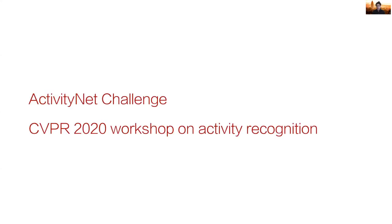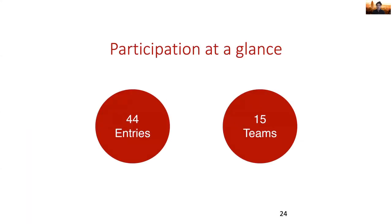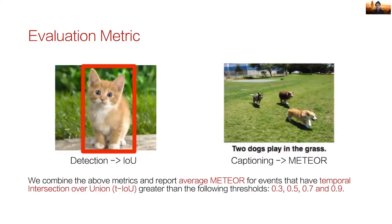So with that, let's change gears and take a look at this year's challenge. We had 44 entries from 15 different teams from around the world participating in the task of dense captioning events in videos. We evaluated the models that were submitted to the workshop challenge by using the average Meteor score between the model descriptions against the descriptions in our held-out test set. We only included generated descriptions as positive examples if they had a certain temporal intersection over union with our ground truth descriptions.